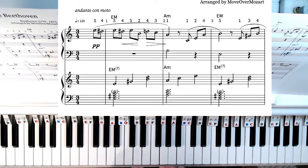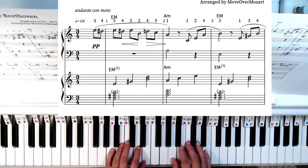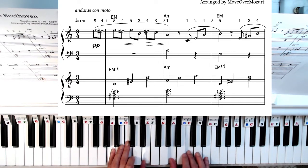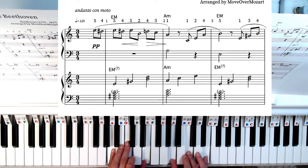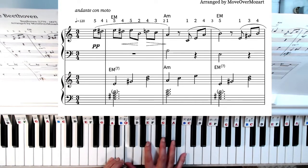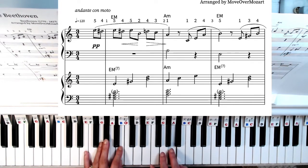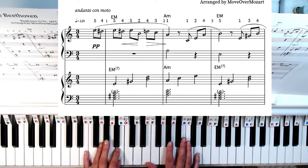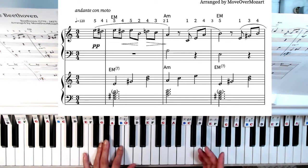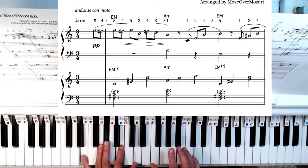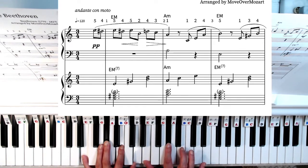Moving on to chord number two is A minor. The notes in A minor are A, C, and E. In measure three we're going back to the E major or E major seventh and again those notes are E, G sharp, B and D.